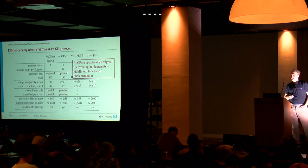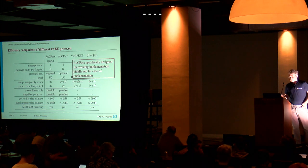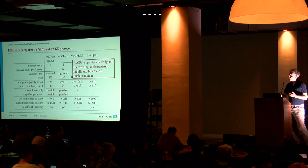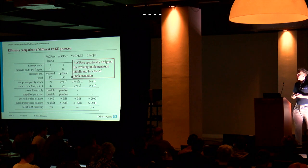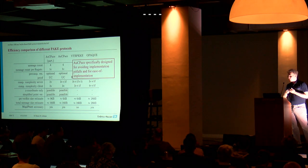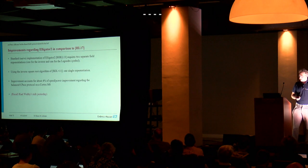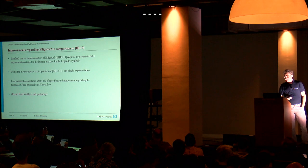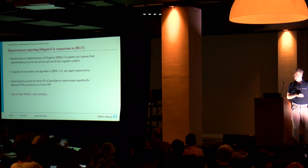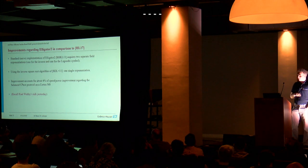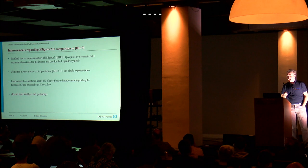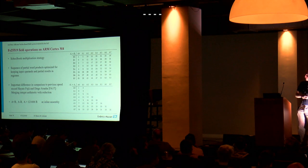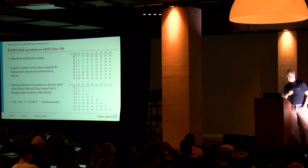AugPACHE is specifically designed for avoiding implementation pitfalls and for ease of implementation, avoiding errors that we have just heard of in the previous talk. Regarding the implementation we succeeded in reducing a bit the computation cost for Elligator by using the method from the Ed25519 paper. This accounts roughly for about 5% of the speed for the balanced sub-protocol. That's very similar to what Riad has been talking about yesterday.